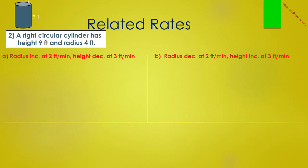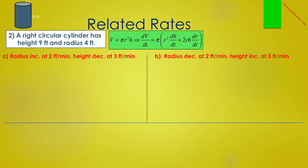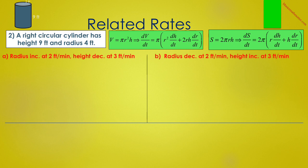In problem 2, we are given a right circular cylinder with height 9 feet and radius 4 feet. We are interested in how fast the volume and surface area of the cylinder are changing when the radius and height are changing at different rates. The volume of the cylinder is πr²h, so dV/dt equals π times r² dH/dt plus h times 2r dr/dt. The lateral surface area, not including the top and bottom, is S equals 2πrH, and therefore dS/dt equals 2π times the quantity r dH/dt plus h dr/dt.